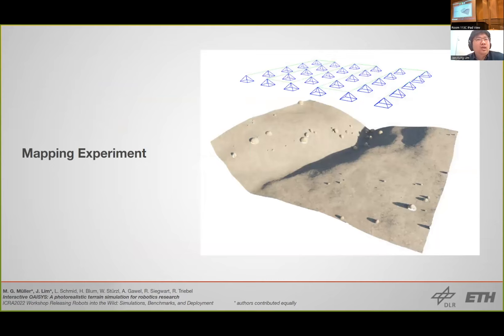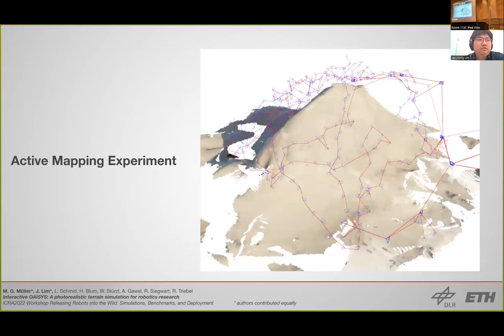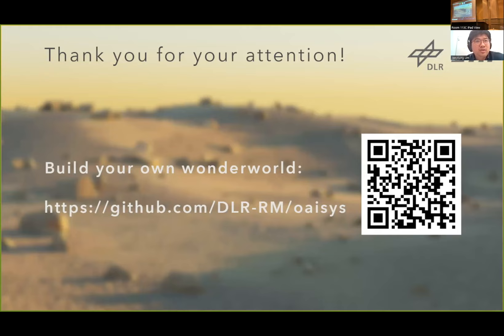To demonstrate the usefulness of interactive operation, we first show mapping experiments with fixed viewpoints — reconstructing a scene in a TSDF-based mapping framework from a lawnmower pattern of viewpoints. We further show an active exploration and mapping task that can successfully map a large hill in the middle of the scene. The code is all open source — please feel free to approach us if you have any questions or are interested in using it.